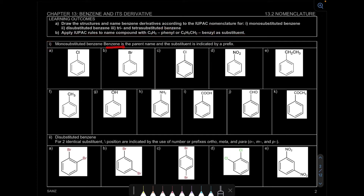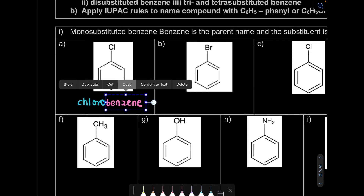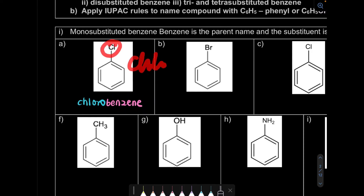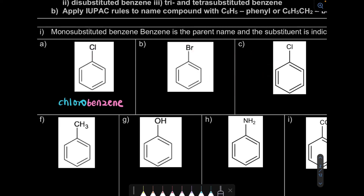So let's look at mono-substituted benzene, where benzene is the parent name and the substituent is indicated by a prefix. Question A: here is your benzene — that's the parent name. The substituent is chlorine, but the substituent name becomes chloro. So that's question A. For question B, the substituent is bromine, so the substituent name becomes bromo, and the name would be bromobenzene.